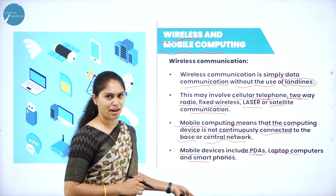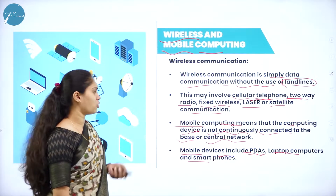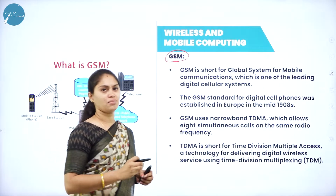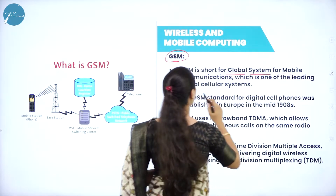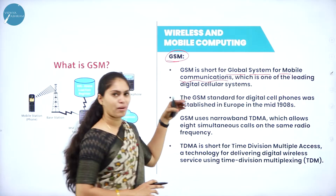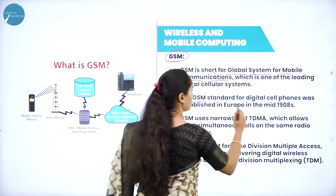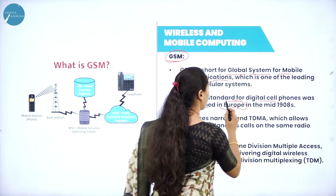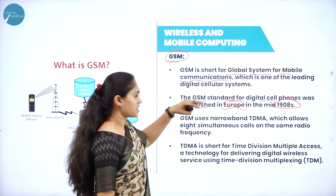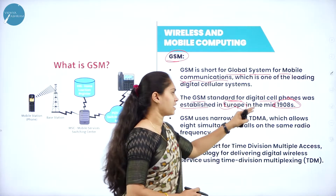In mobile computing we have GSM. GSM is an acronym for Global System for Mobile Communications. In order to have wireless communication, GSM is used. The GSM standard for digital cell phones was established in Europe in the mid-1980s. This GSM standard was established for the purpose of digital cell phones.